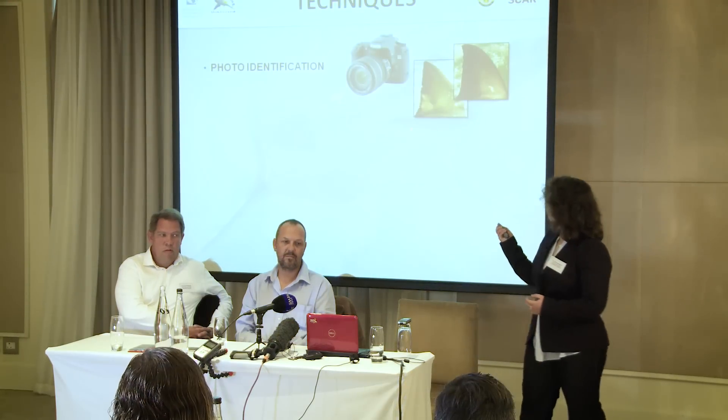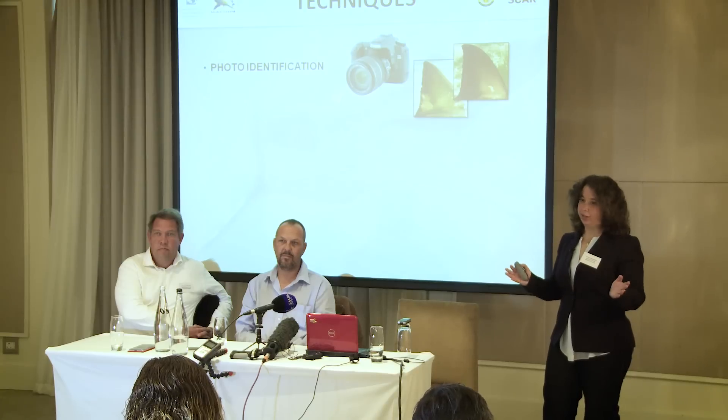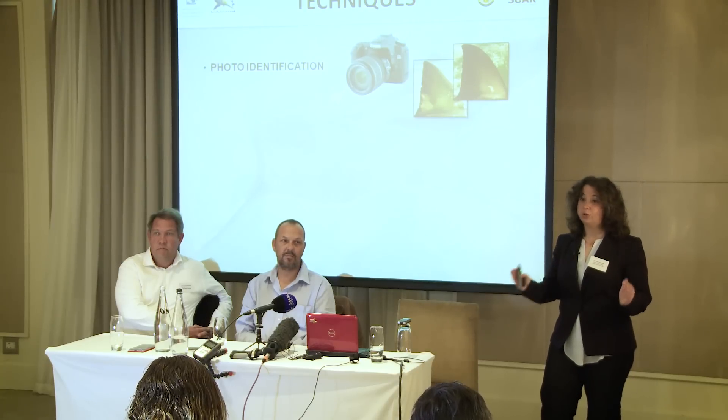The first technique being photo identification. Thankfully, the white shark has a very unique dorsal fin. We can identify each individual by taking a good photo of the dorsal fin — it works just like a fingerprint. We look at the trailing edge of the dorsal, this pattern over here, and with this we can categorize the shark and recognize individuals over time.